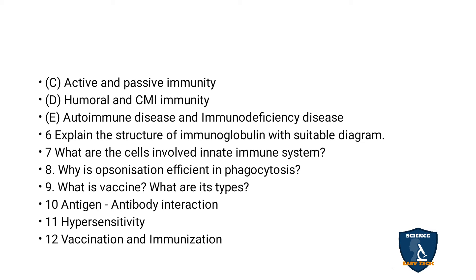Active and passive immunity. Humoral immunity and cell-mediated immunity (CMI). Autoimmune disease. Immunodeficiency and autoimmune disease. What are the cells involved in the innate immune system? Why are neutrophils efficient in phagocytosis? What is a vaccine and what are its types? Antigen-antibody interaction. Hypersensitivity. Vaccination and immunization.